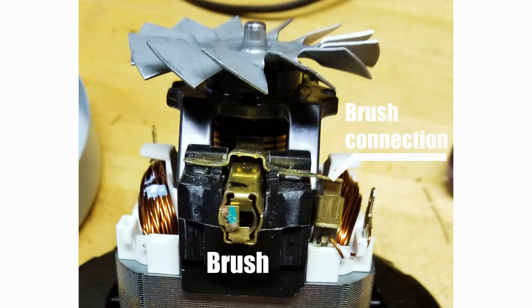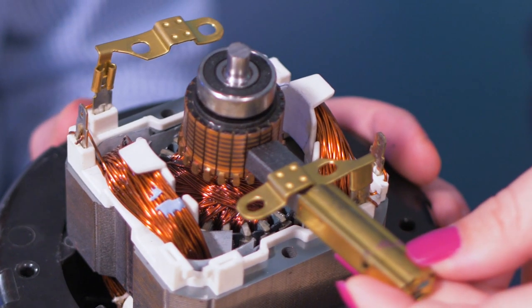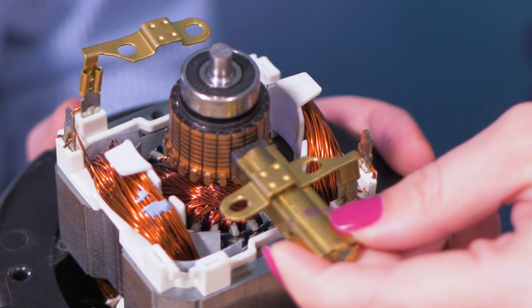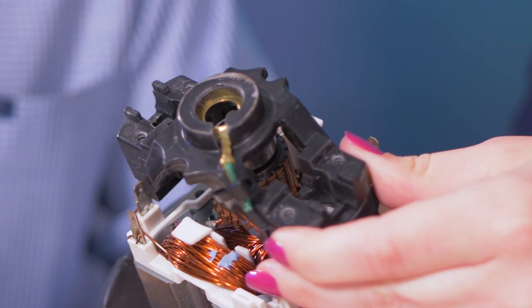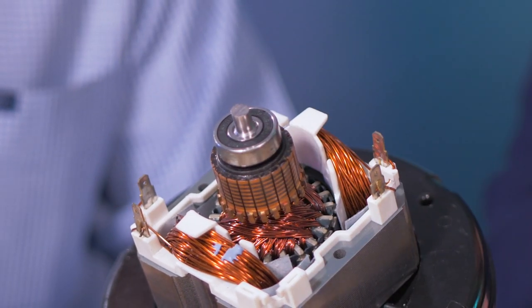Two screws hold each bracket on. These screws come off to let you replace the brushes when they wear out. The thermoset bracket that holds the brushes attaches to the assembly with two screws. By removing them, we were able to push the bracket off the end of the motor shaft and remove it.